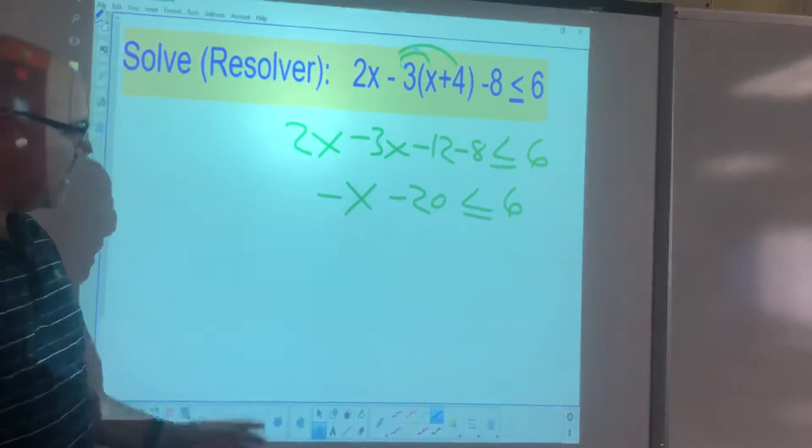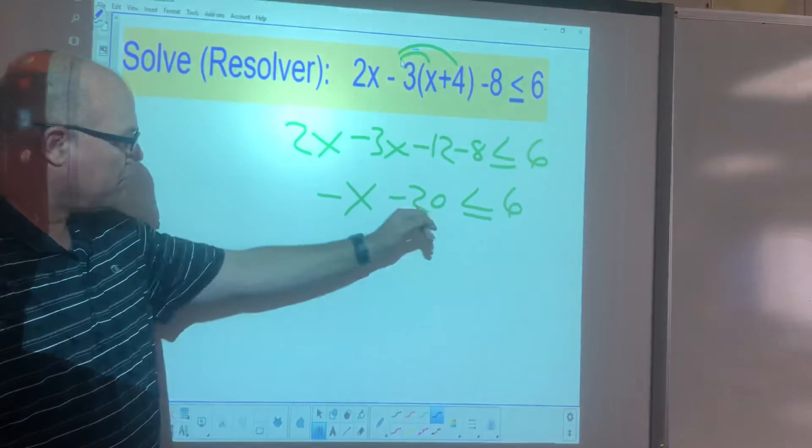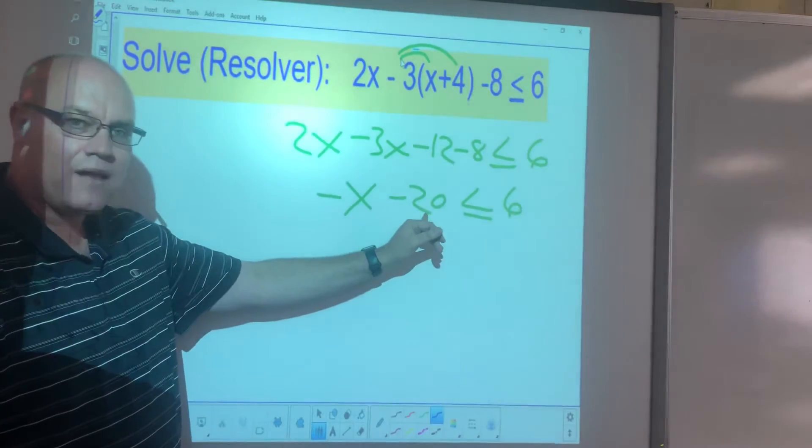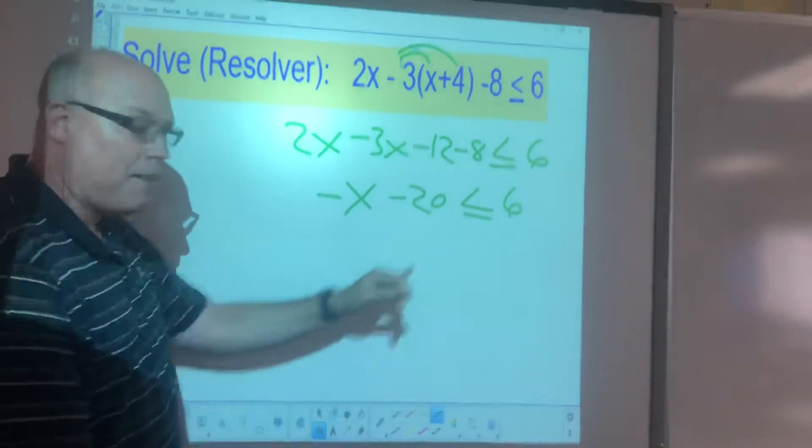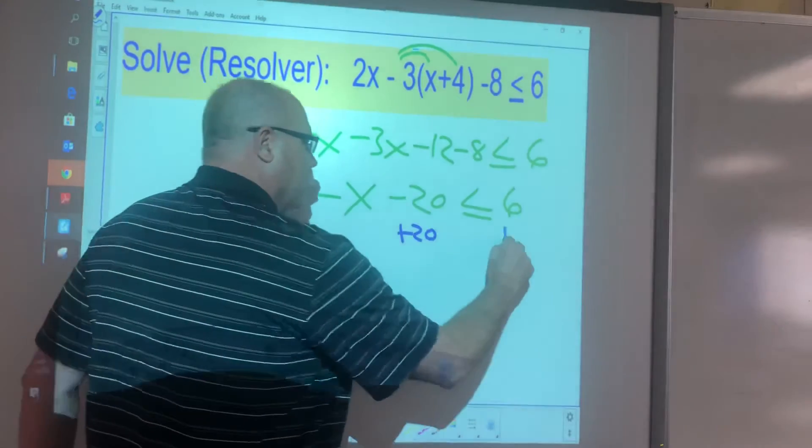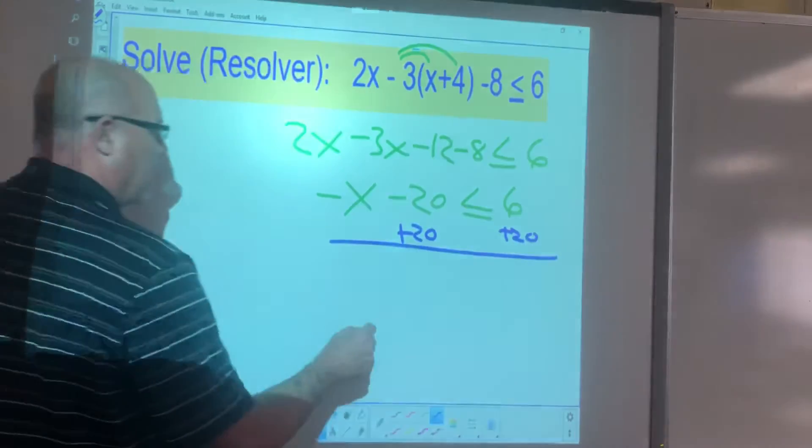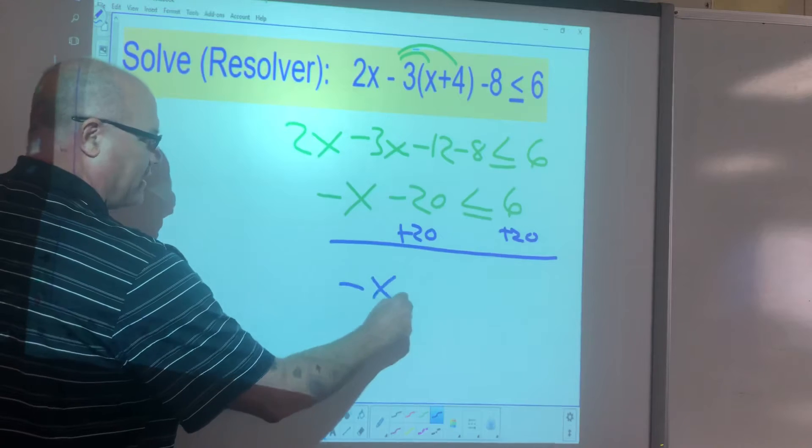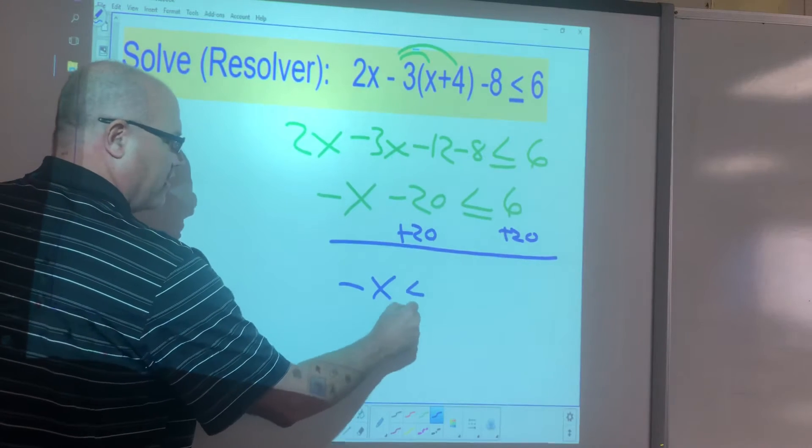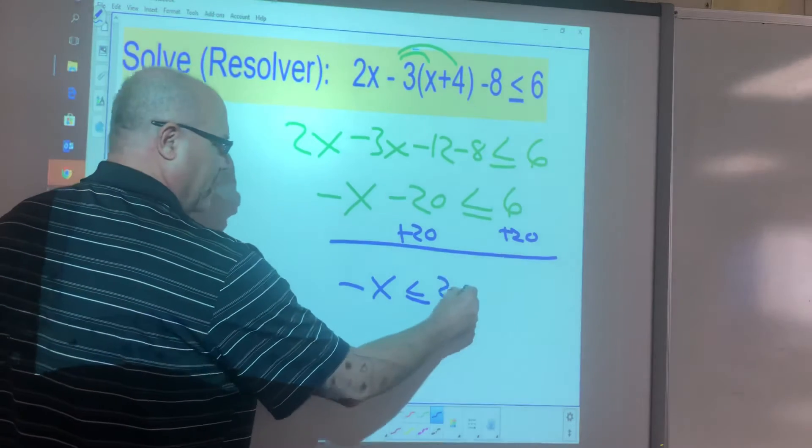Now I want to get x by itself. So I want to move this negative 20. How do we do that? That's right, we add the opposite. So we want to add 20 to both sides. So now we have negative x is less than or equal to 26.